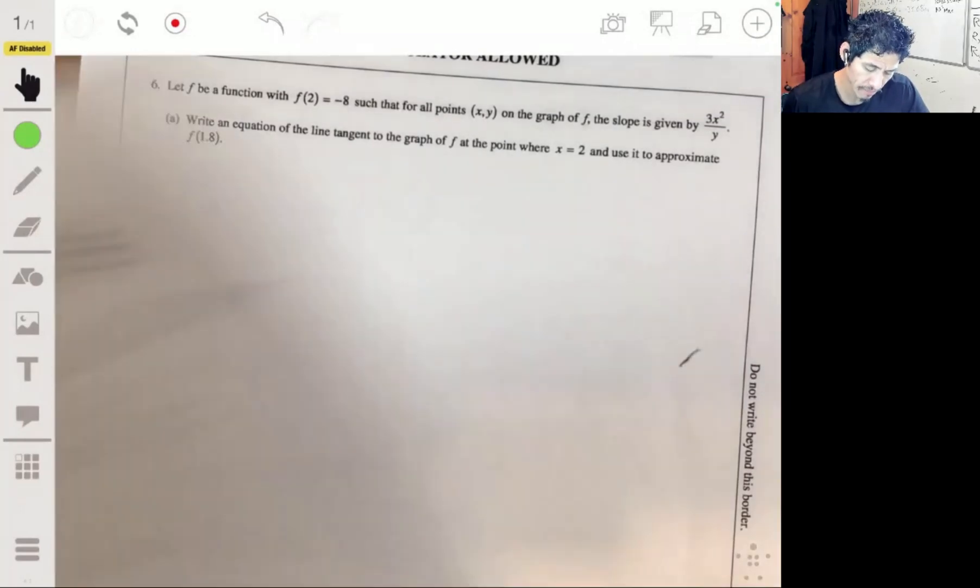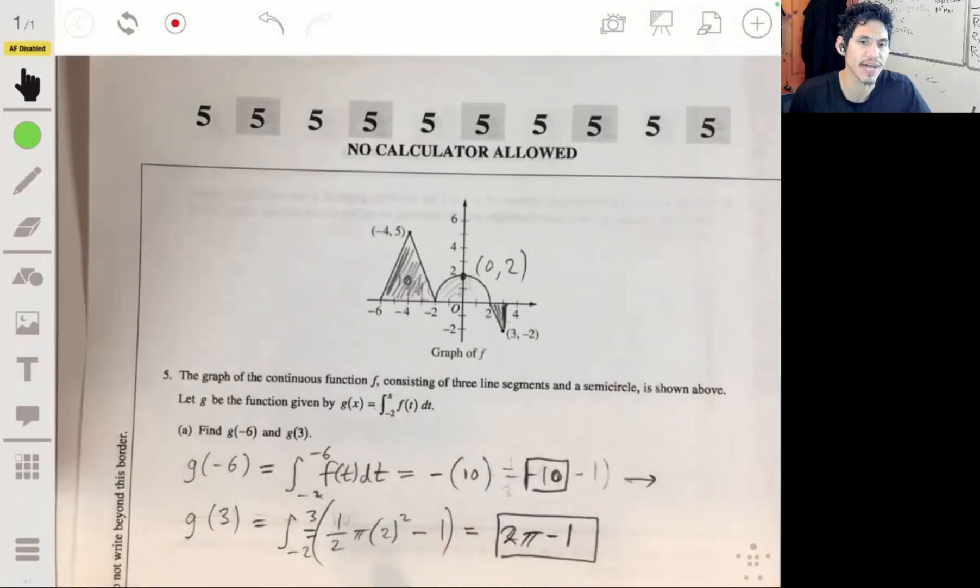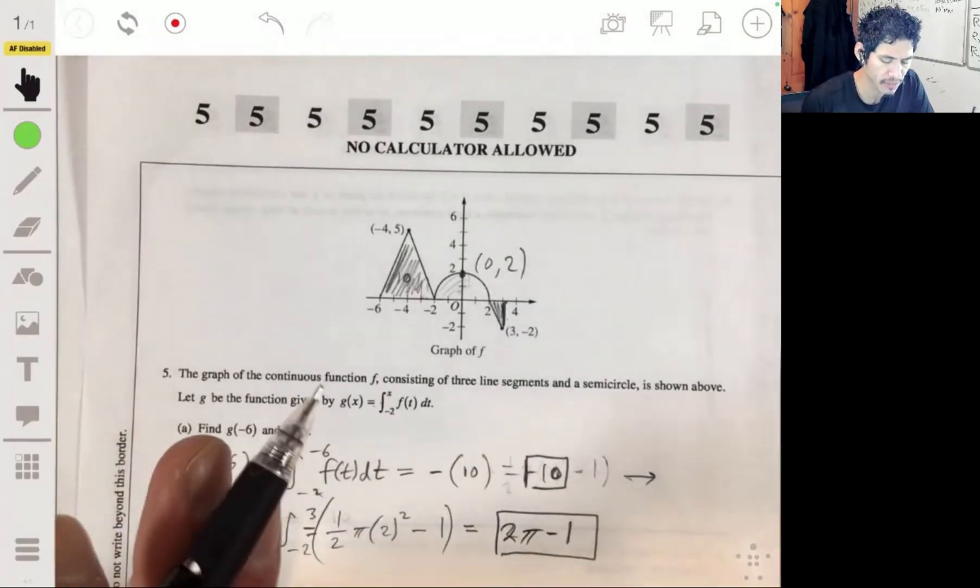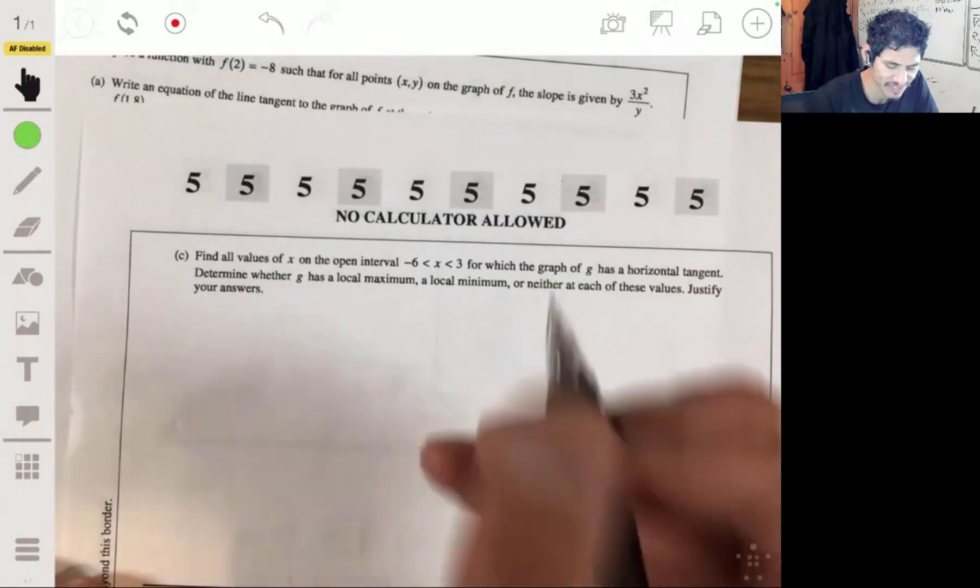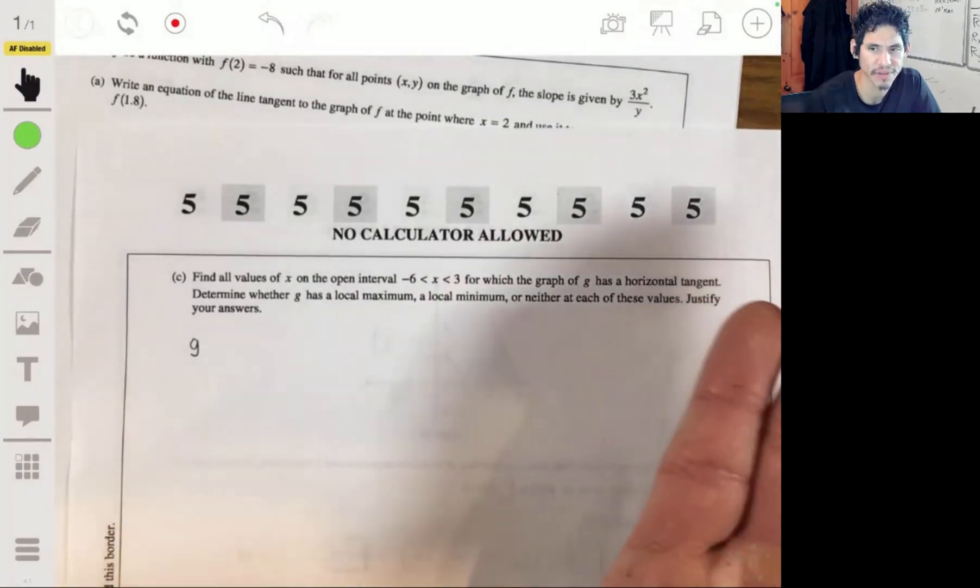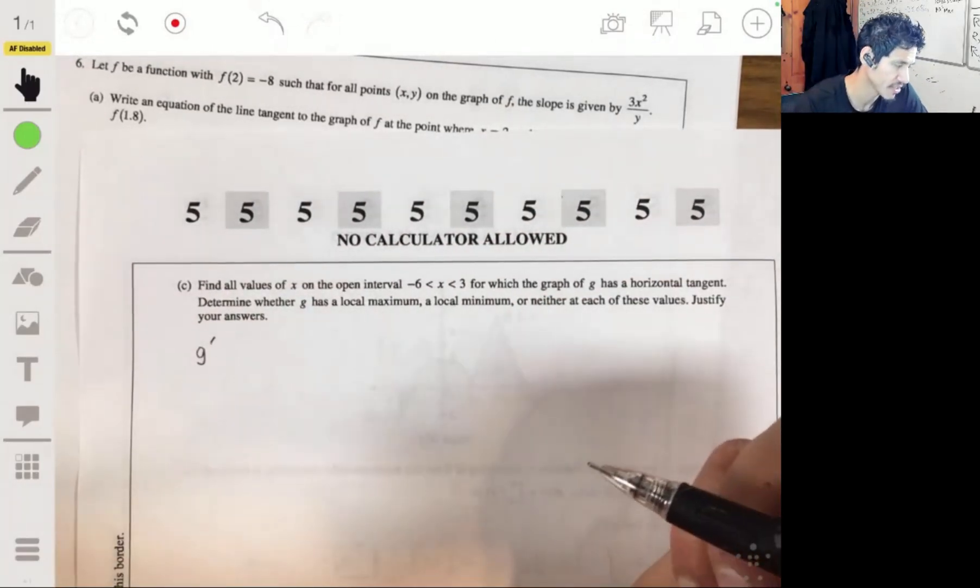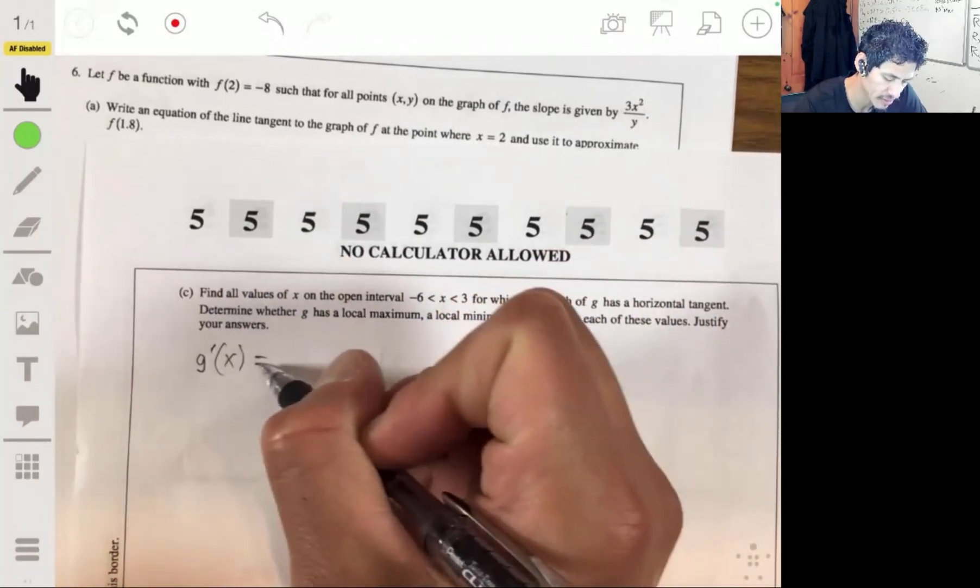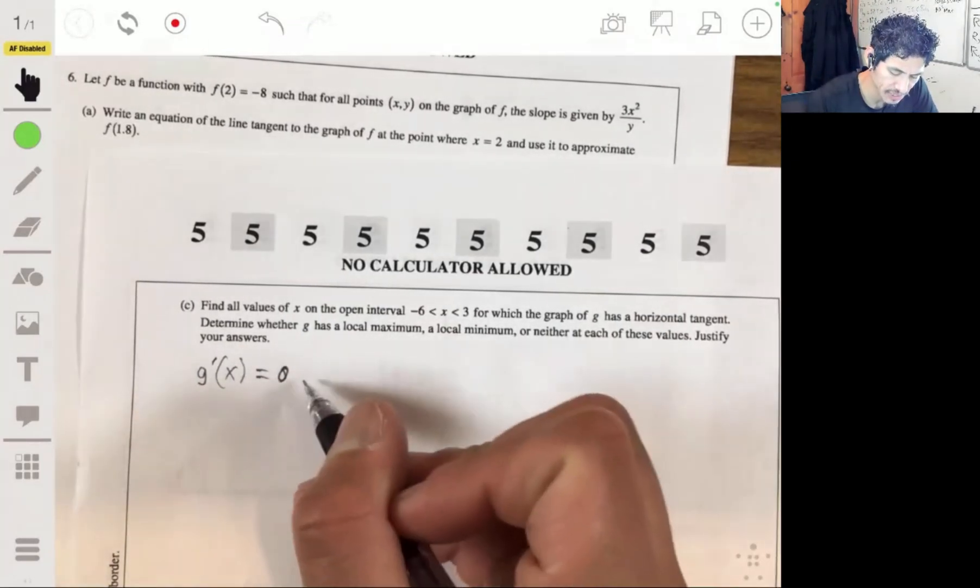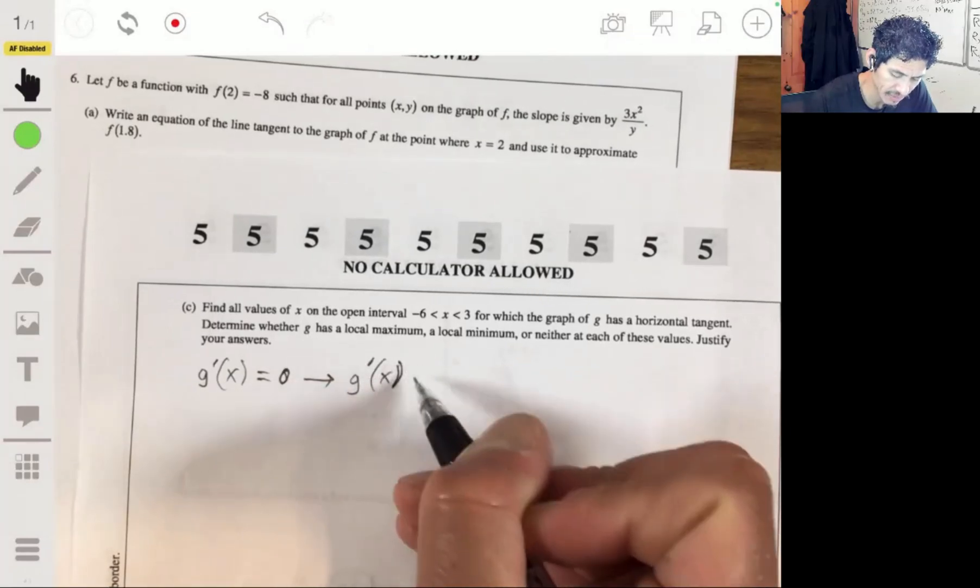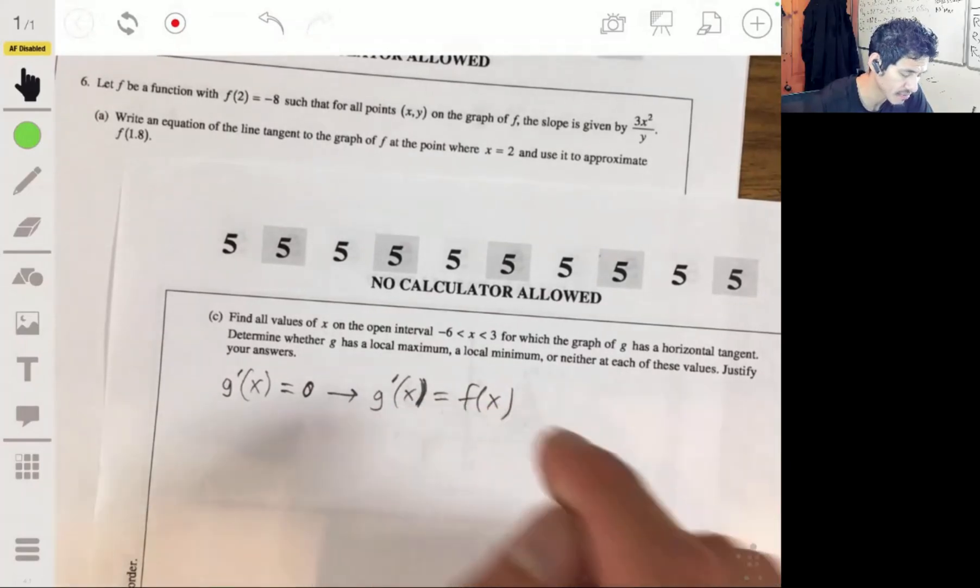Determine whether g has a local max, local min, or neither at these values. Justify your answers. Okay, first let's look at the horizontal tangents. This is g. Remember, g has horizontal tangents. Well, this is not the graph of g, this is the graph of f. So we want to basically find where the graph of f would be equal to the derivative of g. Let me go back to this just because that doesn't sound very clear. We're trying to find, if we don't have a graph, you're trying to find the horizontal tangent line, then you're basically finding where is the derivative of the function equal to 0. So we want to find g prime of x equal to 0.